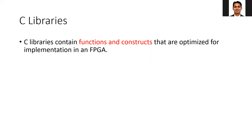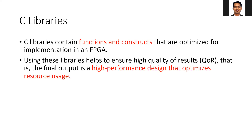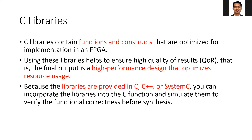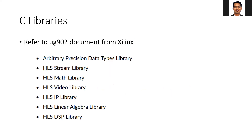Similar to this, different libraries are added in HLS on top of the conventional C library, which includes functions and constructs optimized for implementation on FPGA — for example, how to do FFT efficiently on FPGA, how to do the stream interface on FPGA. Using these libraries helps ensure high-quality results, that is, a high-performance design optimized for implementation on FPGA. Because these libraries are provided in C, C++, and SystemC, you can incorporate them inside your C code and verify functional correctness before synthesis. Using HLS is largely about understanding how to make use of these libraries.